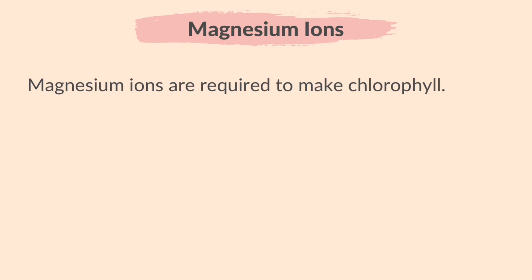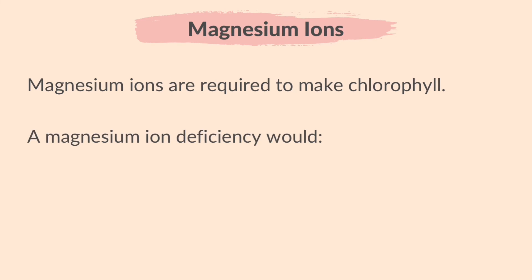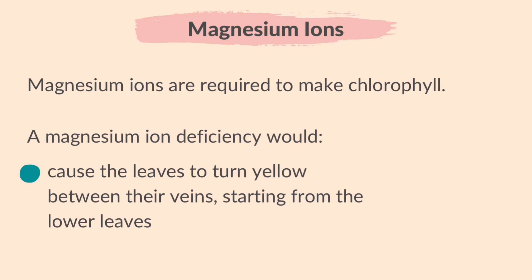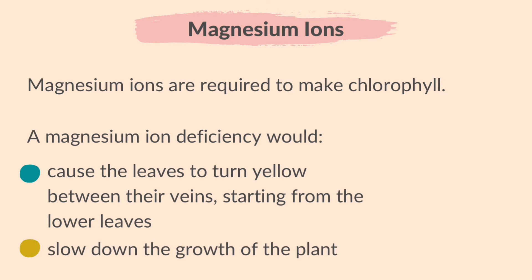Magnesium ions are required to make chlorophyll. If a plant has a magnesium ion deficiency, then it will lack chlorophyll. The leaves will turn yellow from the bottom of the stem upwards and plant growth will slow down due to reduced photosynthesis.